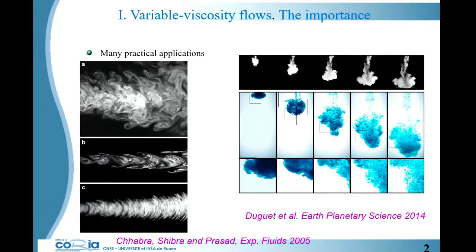Many practical applications are connected with variable viscosity. A lot of attention is given to variable density flows, but much less to variable viscosity flows. To understand the effect of viscosity variations, we concentrate on flows where density is matched and only viscosity gradients are present. Here you have three examples: a fluid issuing into ambient fluid at the same viscosity — a classical jet — and the same fluid issuing into an environment 20 times more viscous, both density matched, so all structural modification is due to viscosity variations.